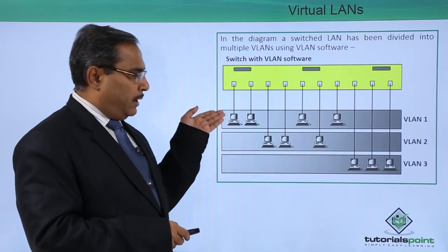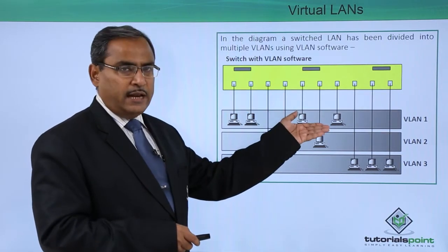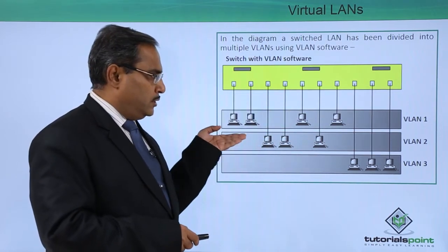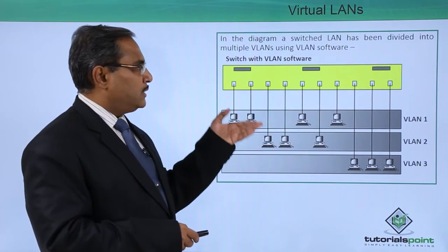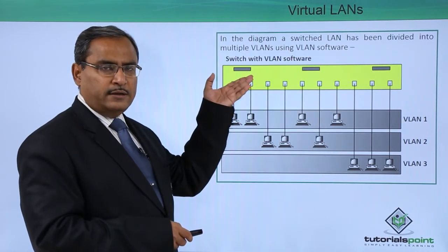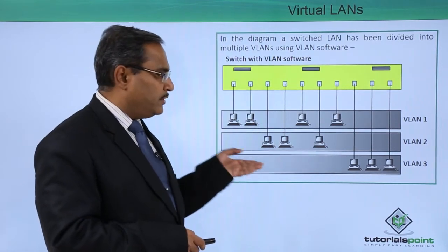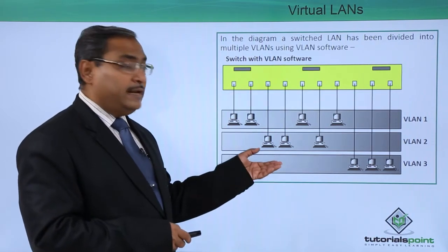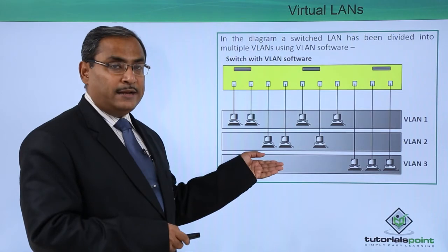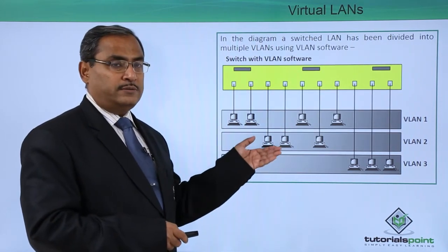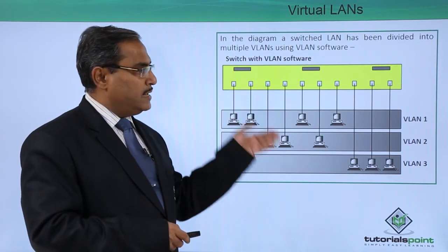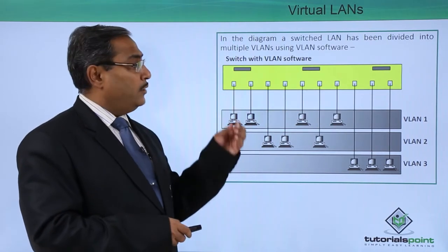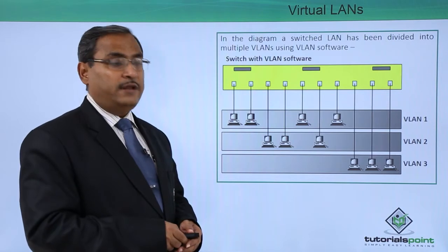You can find that multiple nodes are there in VLAN 1, some other nodes connected with the same switch form VLAN 2, and some other nodes connected with the same switch with the VLAN software are belonging to another LAN. So it is very interesting that we are creating multiple LANs — multiple nodes residing in respective LANs connected with the same switch where the VLAN software has configured all these VLANs.